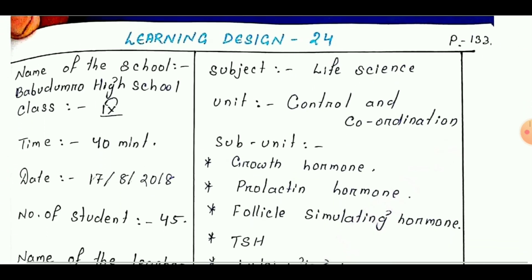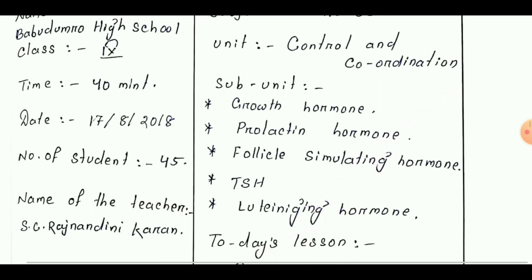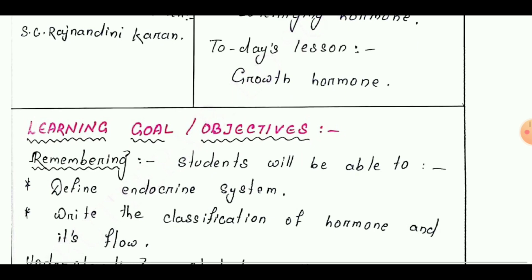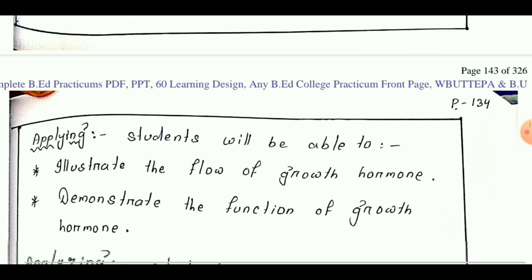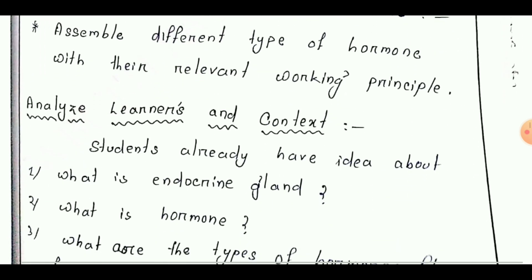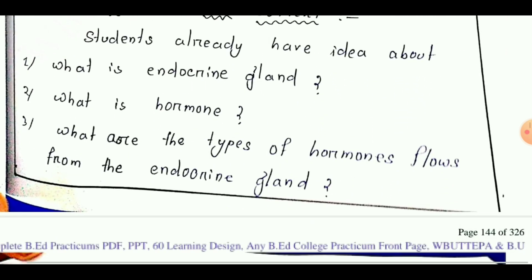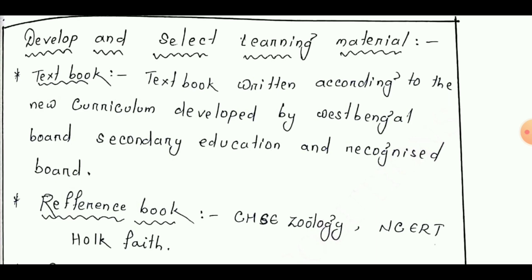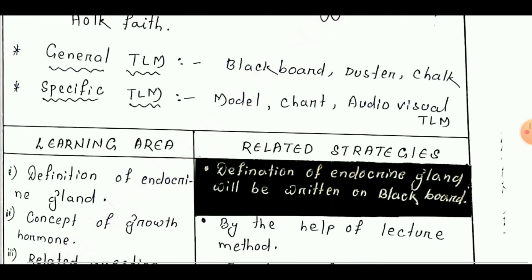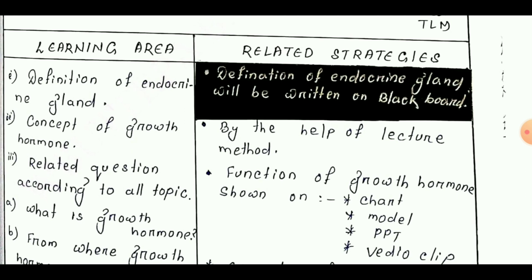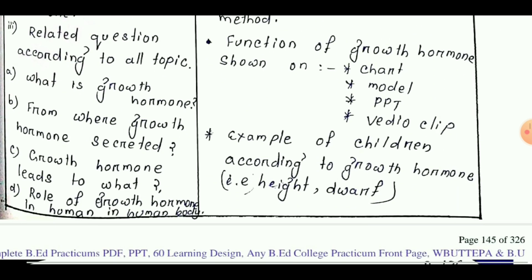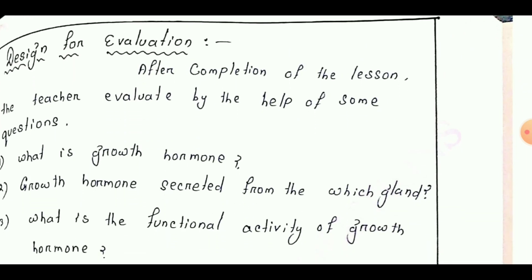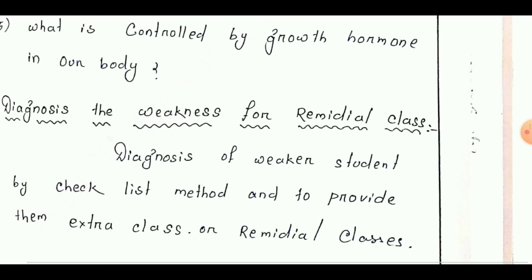Learning design number 24 is taken from Class 9. Today's lesson is 'Growth Hormone.' Learning goals are: remembering, understanding, applying, analyzing, evaluating, and creating. Next point is analyze learners and context. Every learning design has the same format. Next is develop and select learning materials, then teaching strategy with two parts: learning area and related strategy. Next is design for evaluation, and the last point is diagnosing the weakness for remedial class.